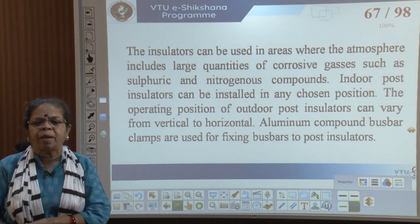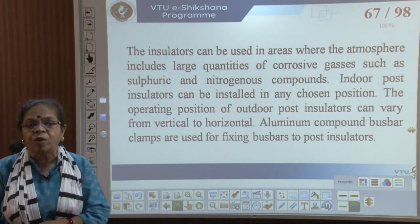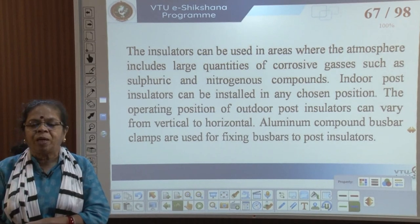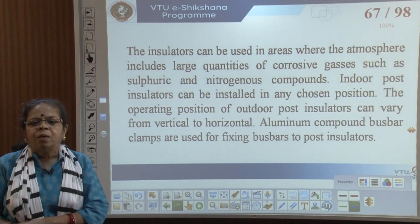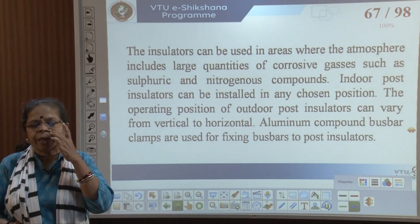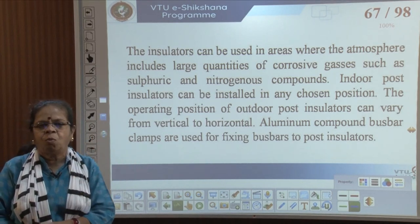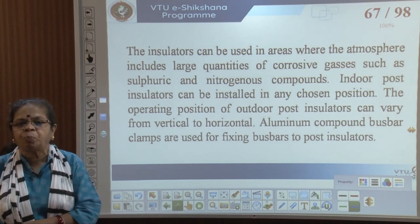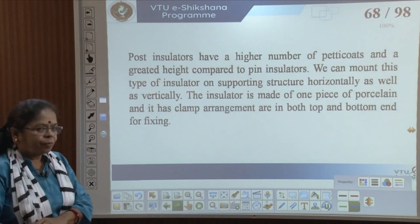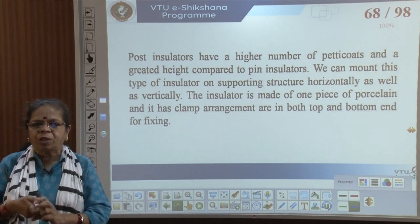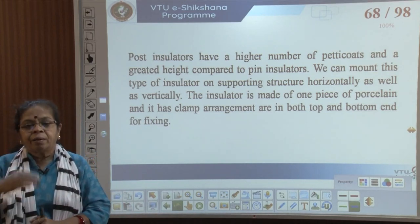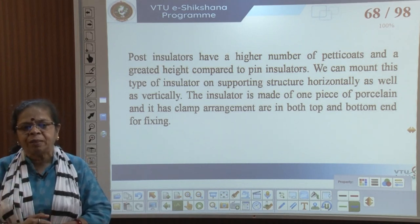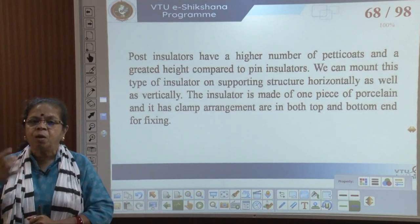Post insulators can be used in areas where the atmosphere includes large quantities of corrosive gases such as sulphuric and nitrogenous compounds. Indoor post insulators can be installed in any chosen position, and outdoor post insulators can be placed horizontally or vertically depending on available space. Aluminium clamps are normally used for fixing bus bars to the post insulators, and the insulator is typically made of one piece of porcelain with clamping arrangements at both top and bottom.